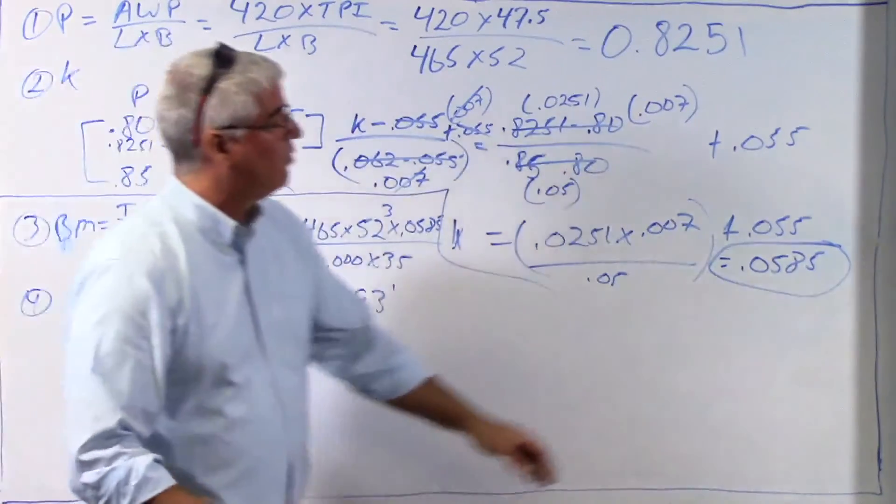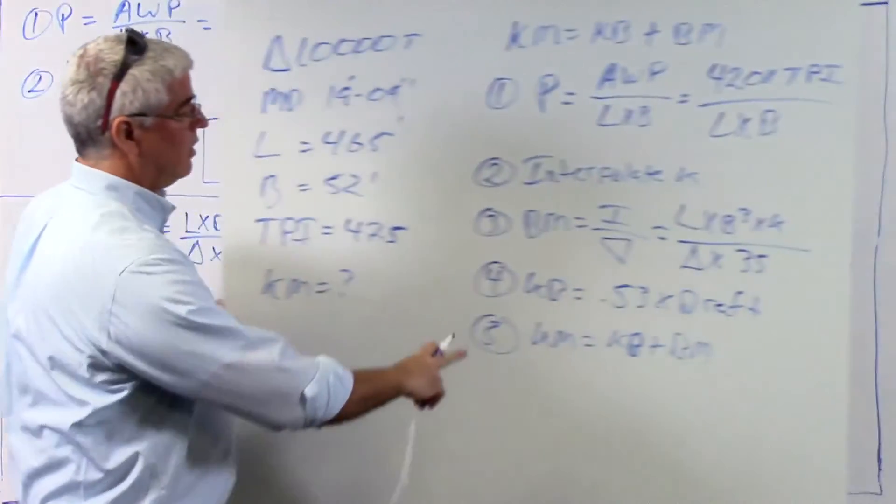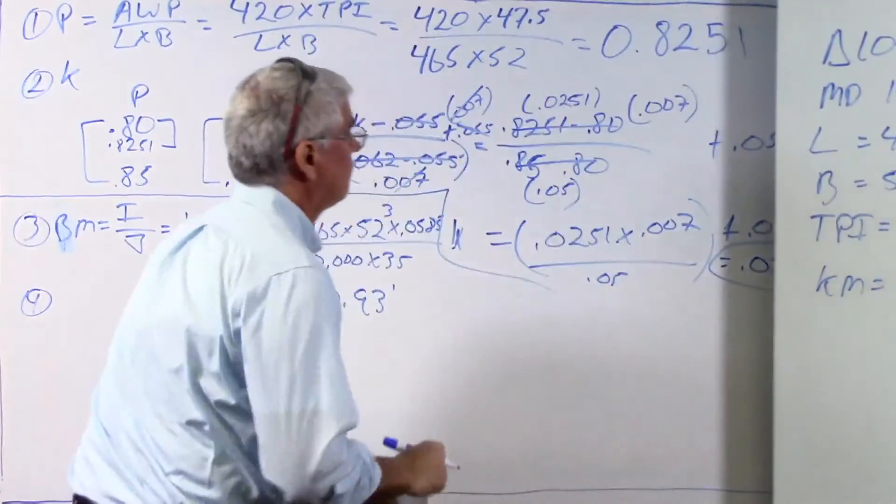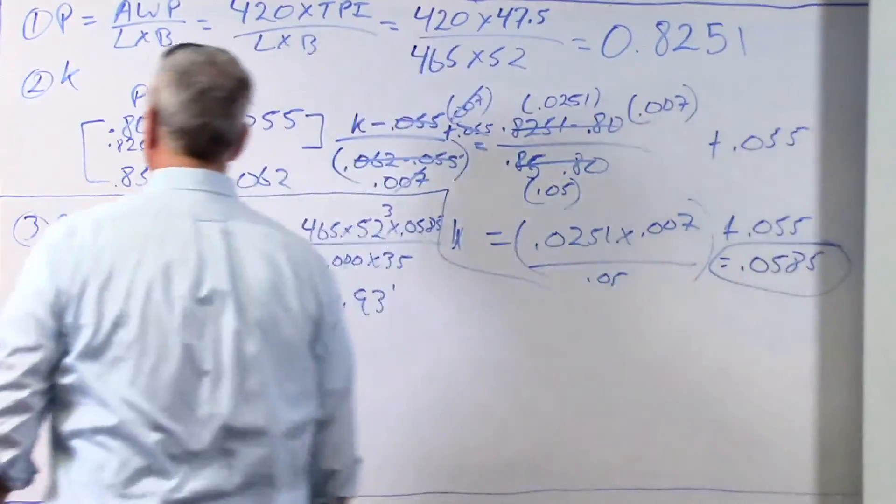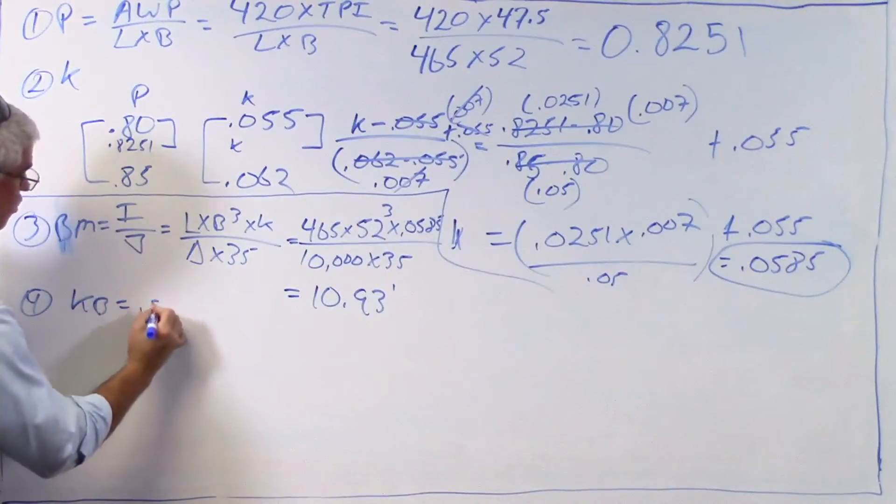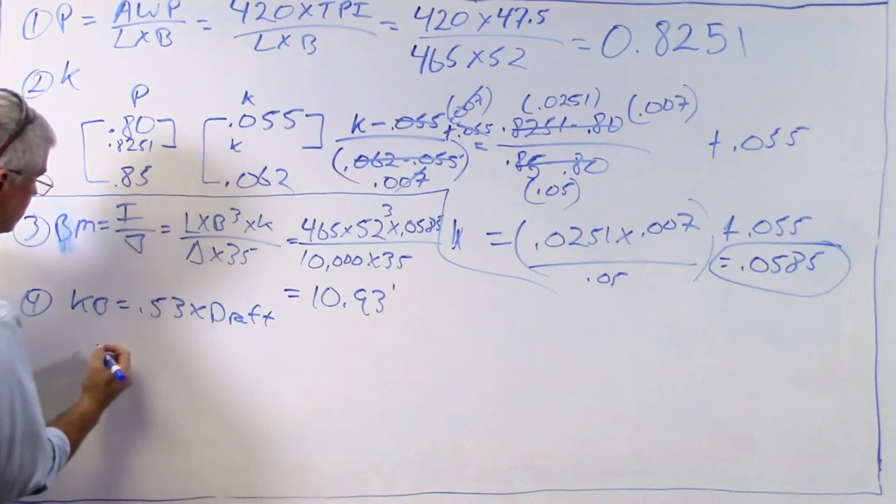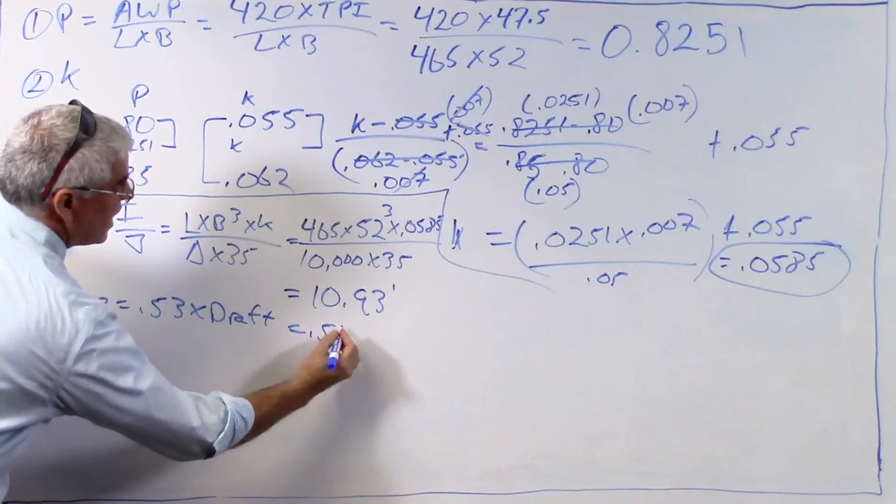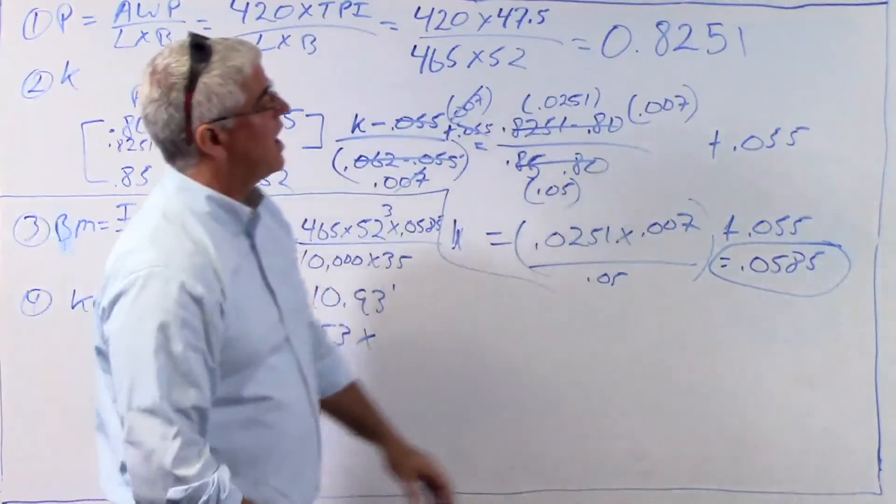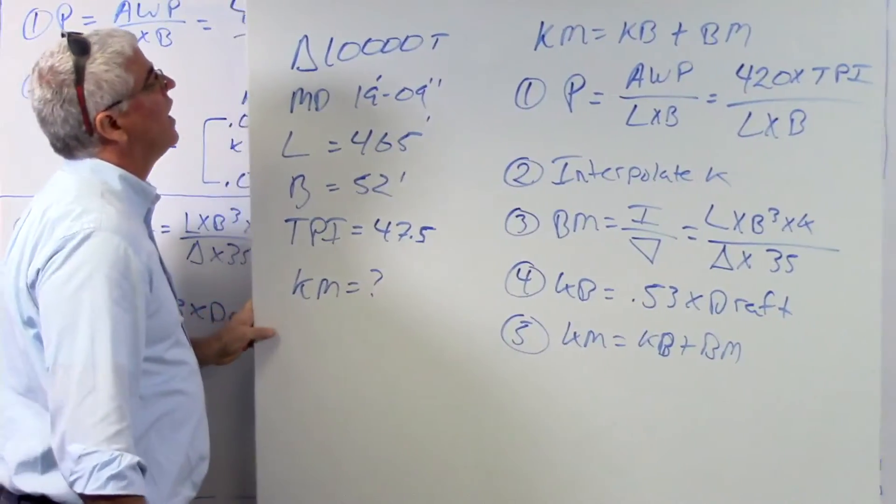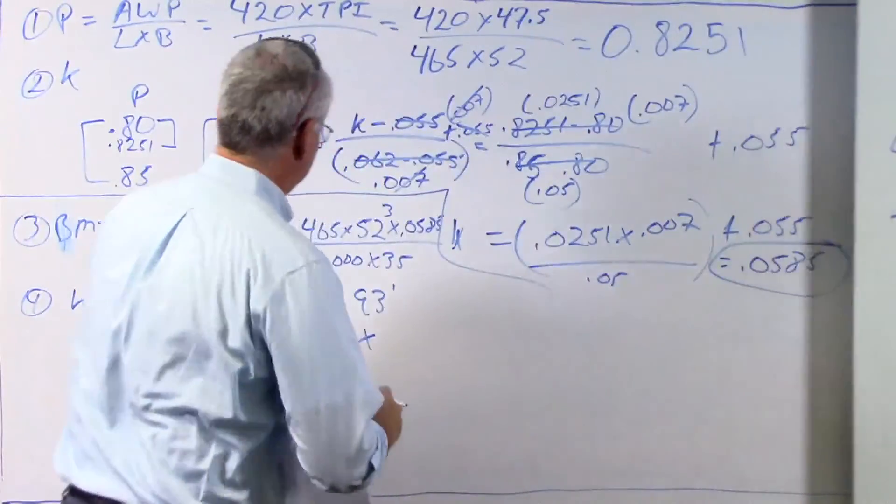Step four. Step four is kb equals 0.53 times draft. So kb equals 0.53 times draft. And so that's going to be 0.53 times, well, the draft was, I think, 1909. The mean draft is 1909. So that's going to be 19.75.